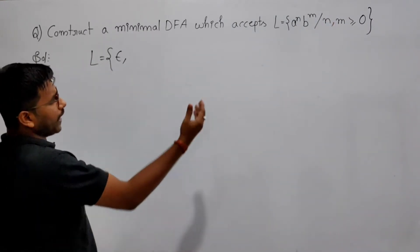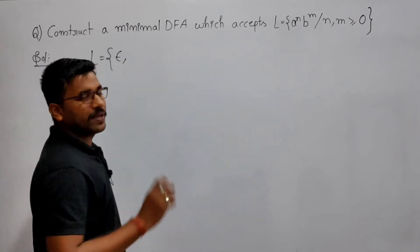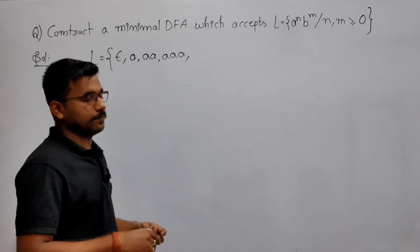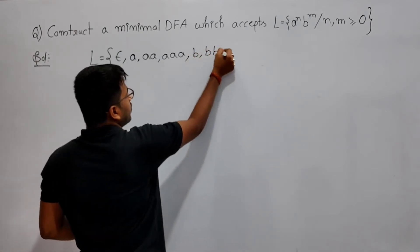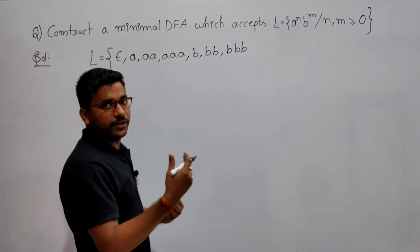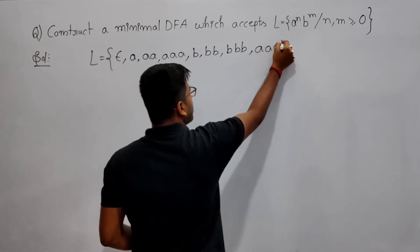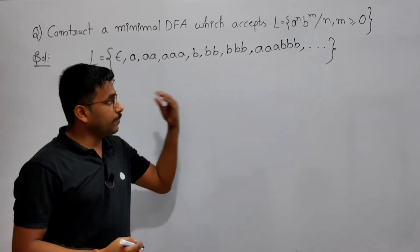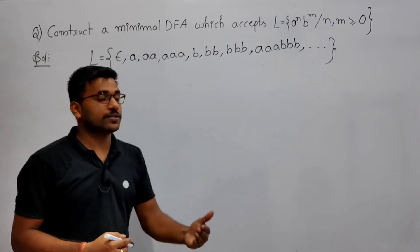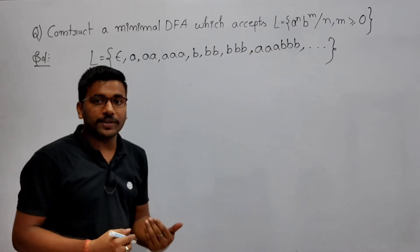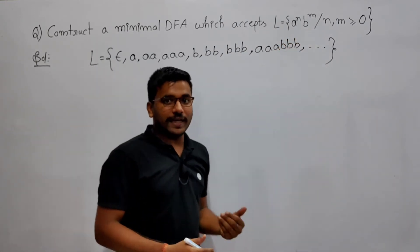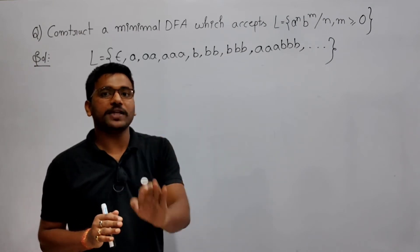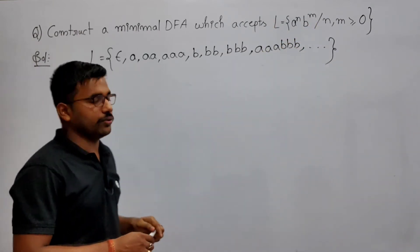If we fix m as zero and vary n, we get any number of a's. If we fix n as zero and increase m, we get any number of b's. So valid strings include any number of a's followed by any number of b's. The only restriction is that once you see a 'b', there should not be any 'a' after it.